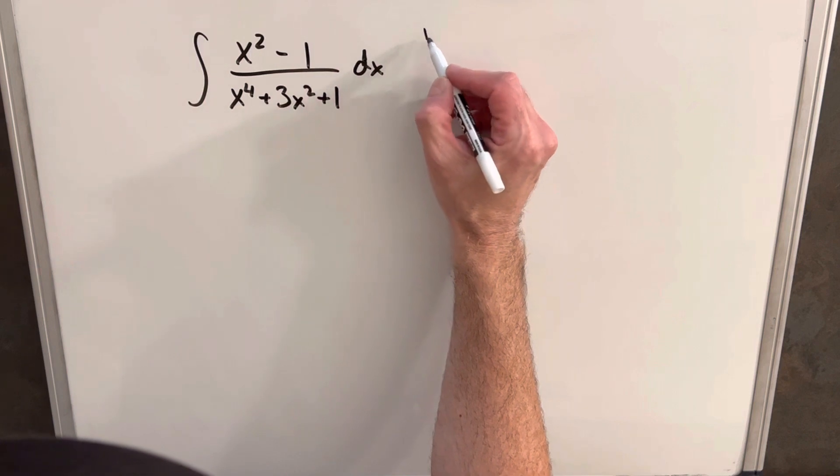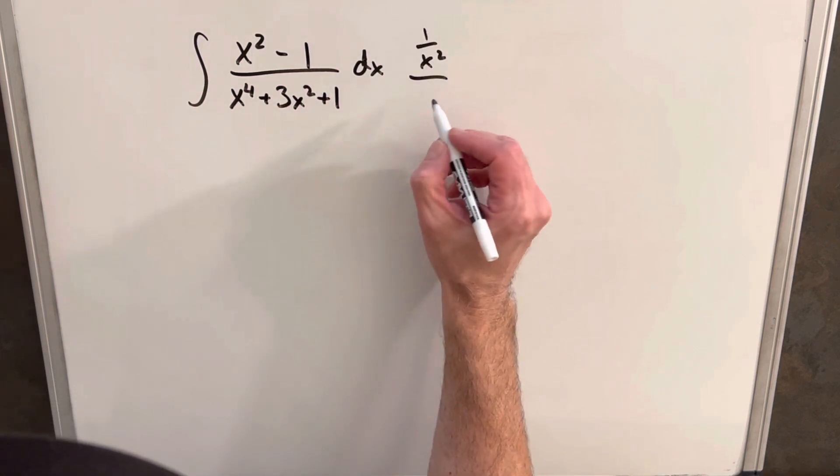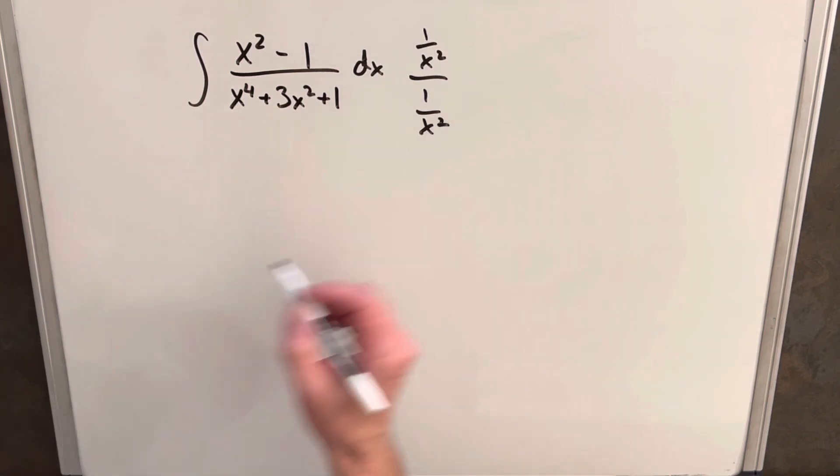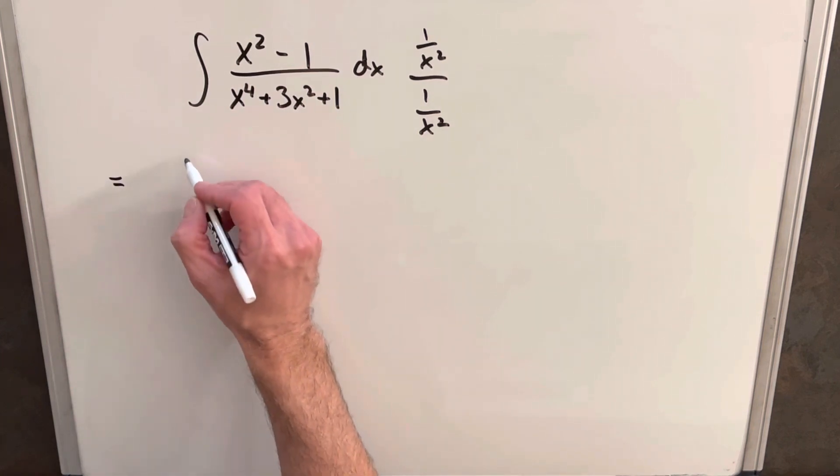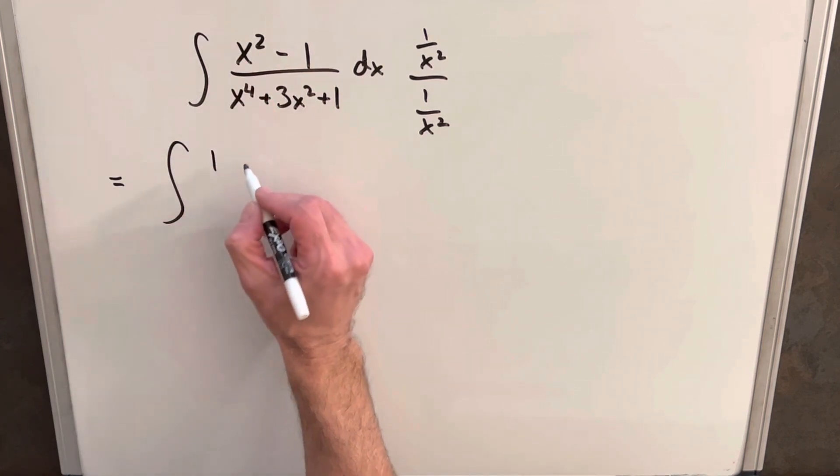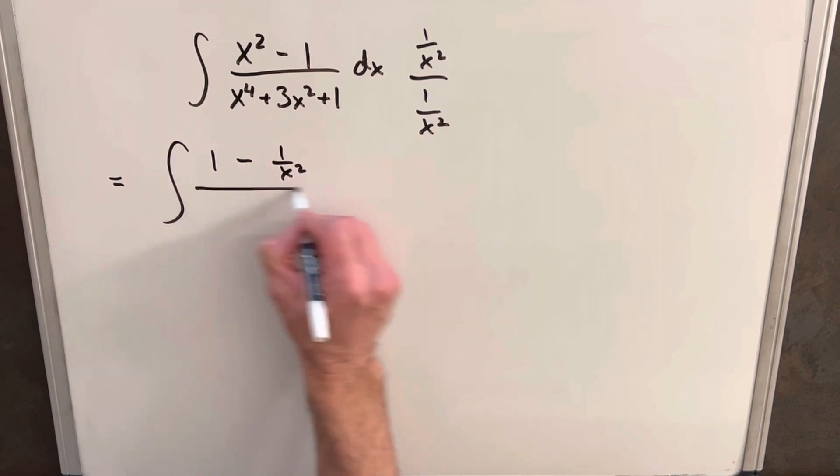What we're going to do is just multiply the numerator and denominator by 1 over x squared to kind of just change the way this whole thing looks. So when we do that, we're going to have a 1 minus 1 over x squared in the numerator.